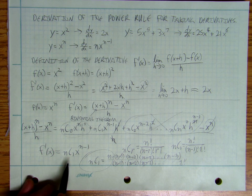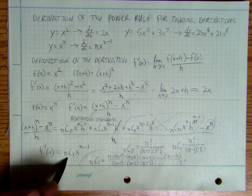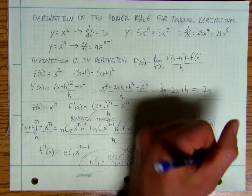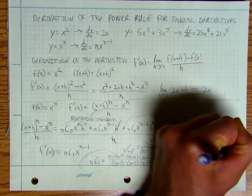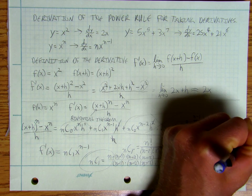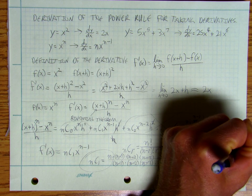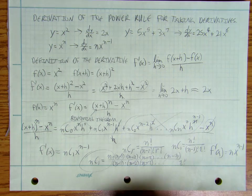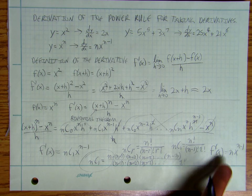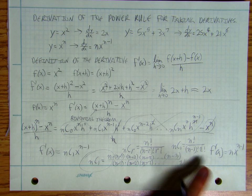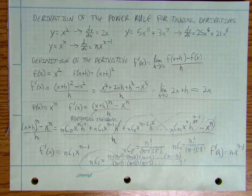Finally, that allows me to replace nC1 with n, and so I've got f prime of x is equal to n times x to the n minus 1. And there's the derivation of the power rule for taking derivatives.